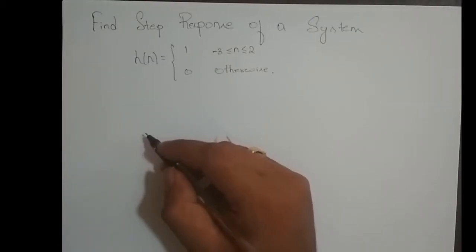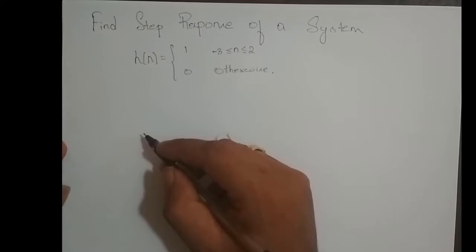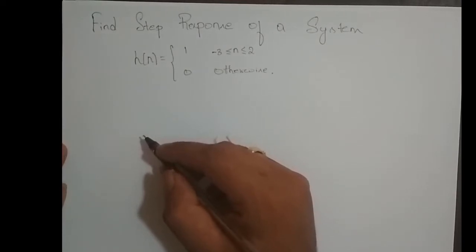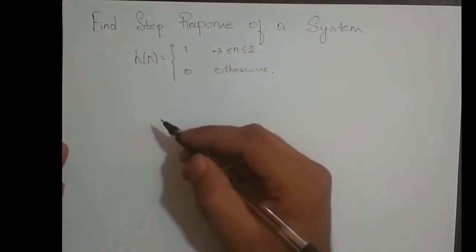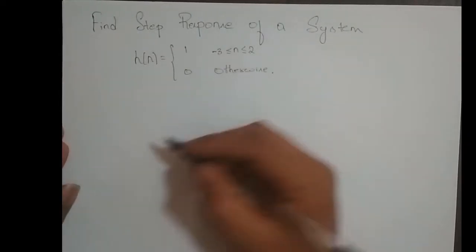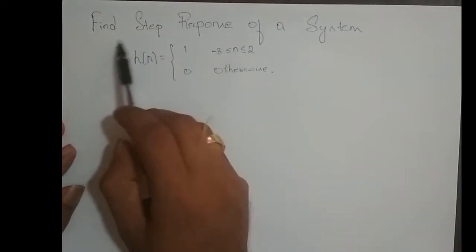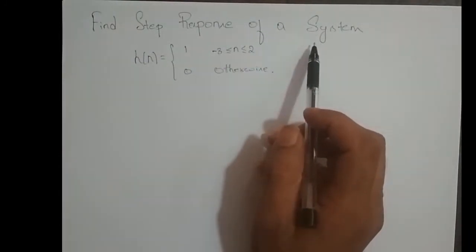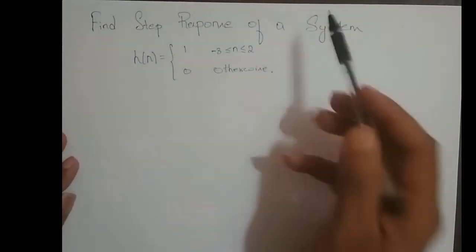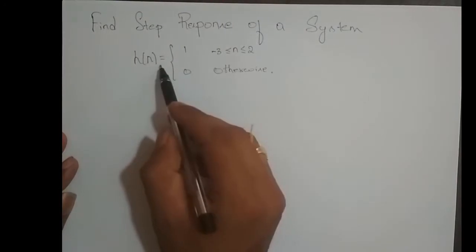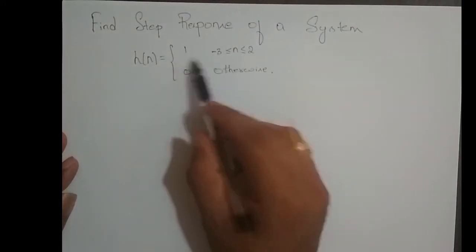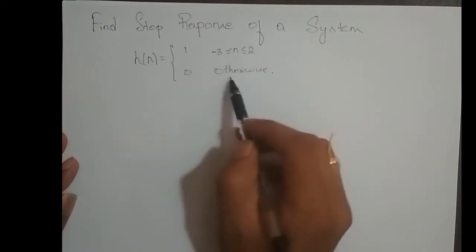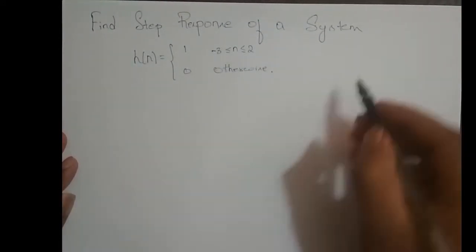Hey guys, we shall try to solve some problems on finding the step response of an LTI system. So we have a problem here: find the step response of a system with impulse response H of n, where H[n] = 1 for n varying from minus 3 to 2, and equal to 0 otherwise.